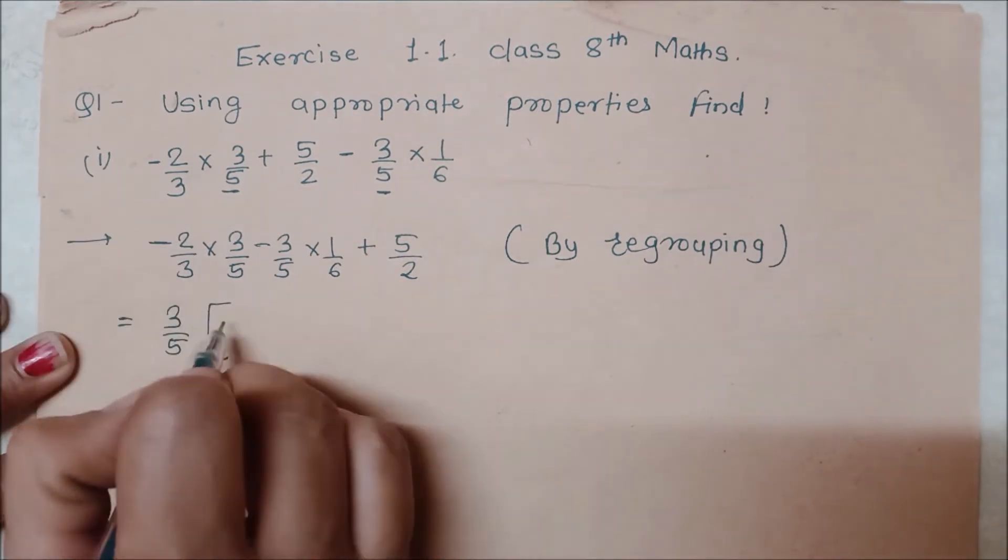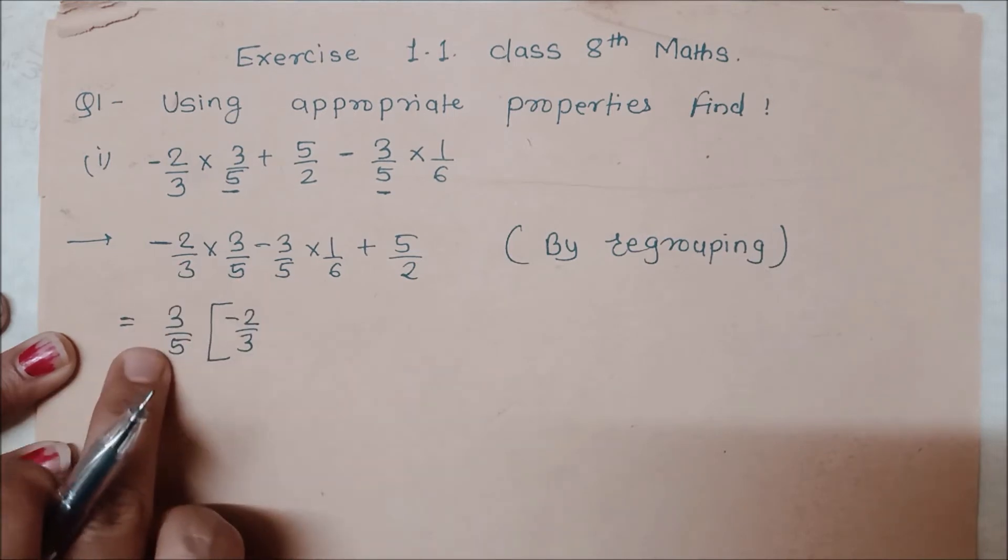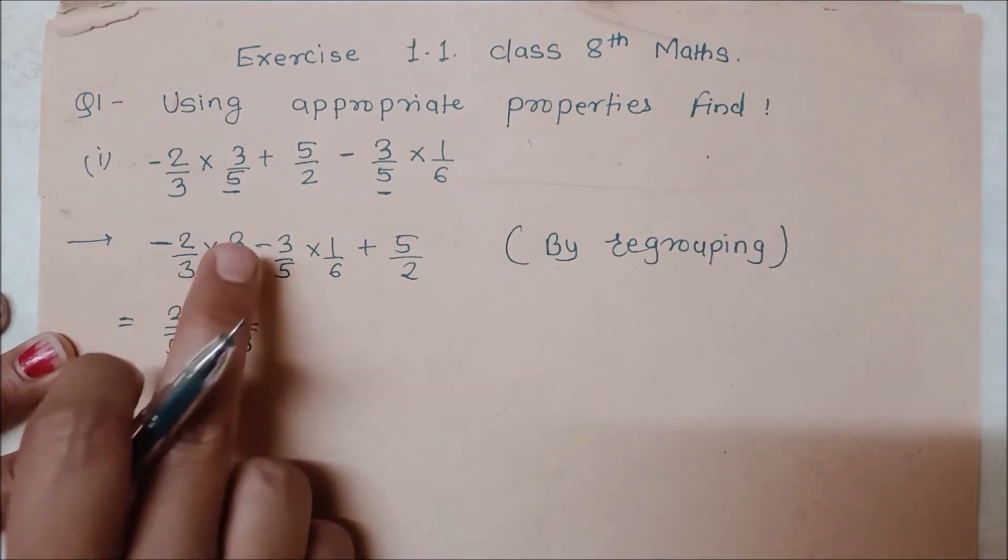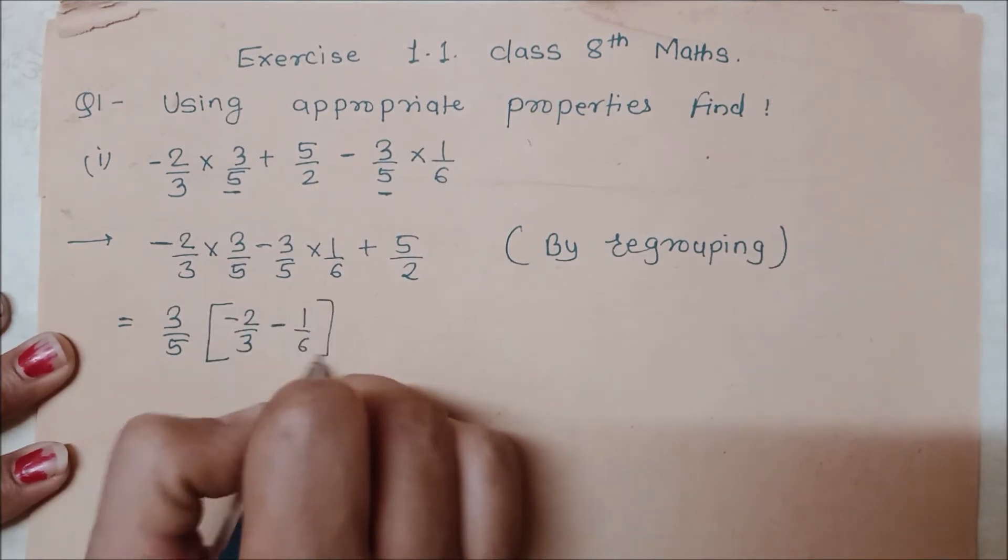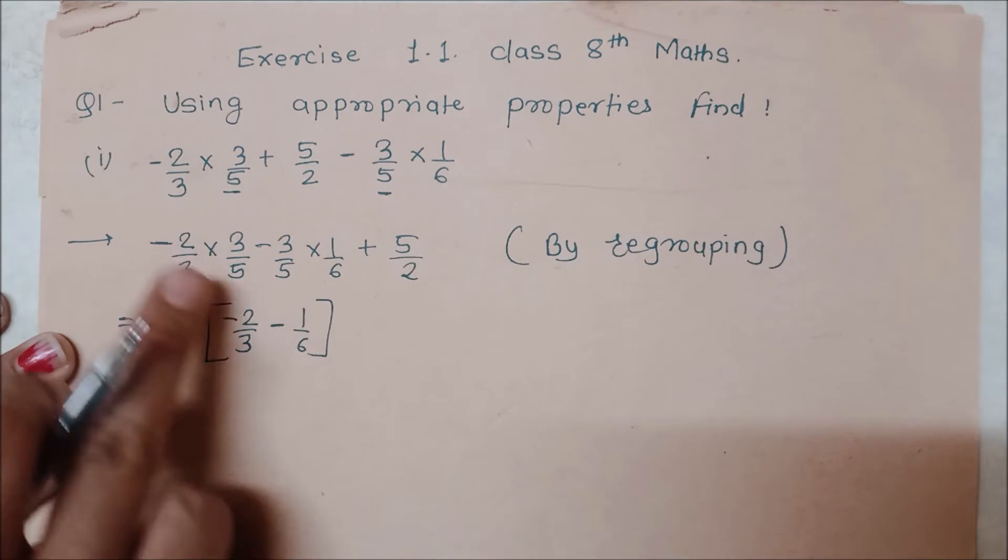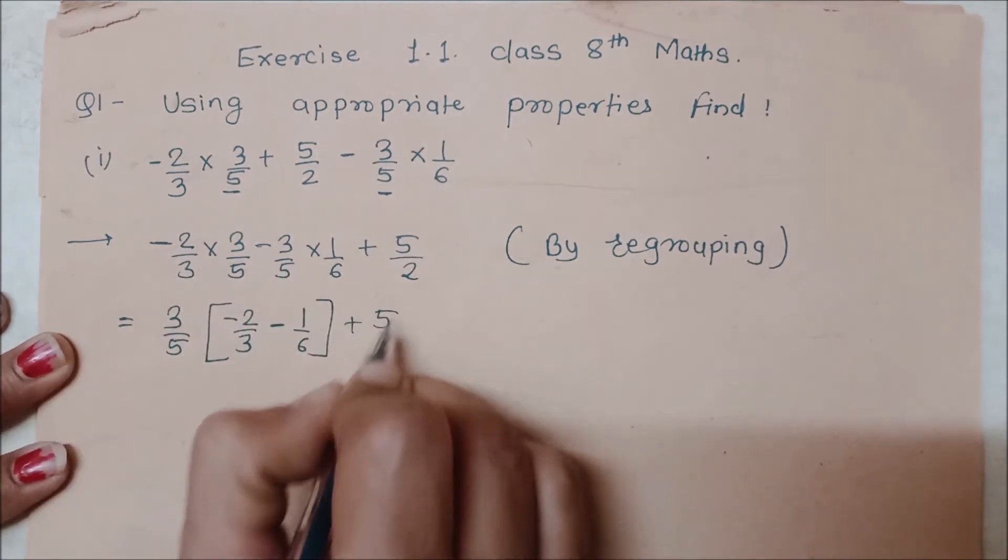Now, 3 by 5 is in this family and this family, so we will take out the common term. If I do like this, 3 by 5, we put it outside the bracket. In the bracket: minus 2 upon 3, because we took 3 by 5 outside, minus 1 by 6, plus 5 upon 2 will remain here.